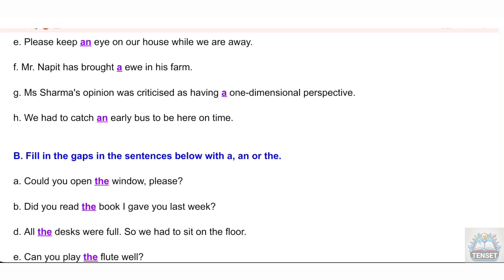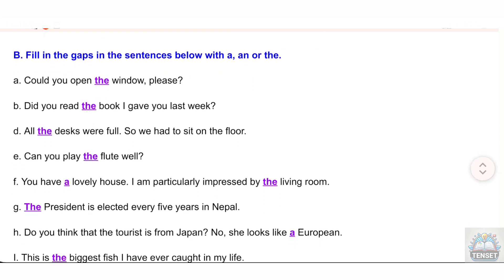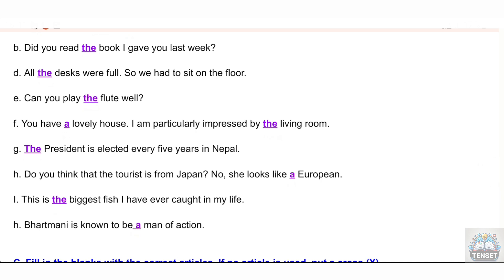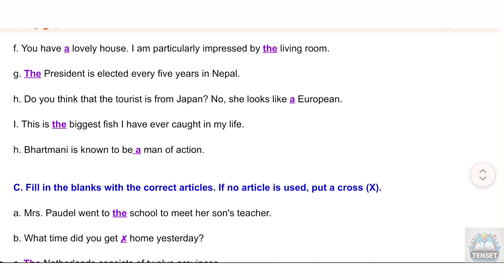Section B: Fill in the gaps with 'a' or 'the'. A — Could you open the window, please? B — Did you read the book I gave you last week? D — All the desks were full, so we had to sit on the floor. E — Can you play the flute well? F — You have a lovely house; I am particularly impressed by the living room. G — The president is elected every five years in Nepal. H — Do you think the tourist is from Japan? No, she looks like a European. I — This is the biggest fish I have ever caught in my life. J — Bartmaney is known to be a man of action.